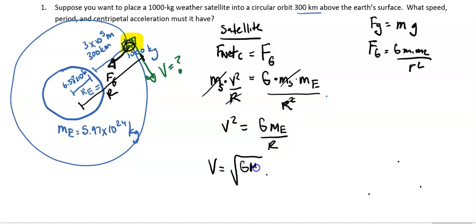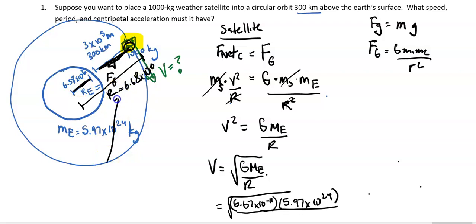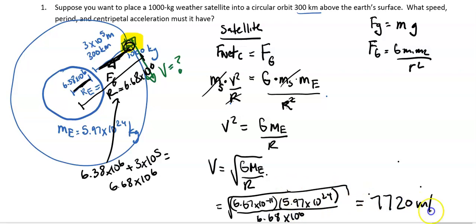Let's go ahead and just plug in numbers now. So 6.67 times 10 to the negative 11, mass of the Earth is 5.97 times 10 to the 24, radius, that is our total radius, which is going to be the sum of our two distances right here. So the distance above the surface of the Earth plus the radius of the Earth, which when I add those two together, I get 6.68 times 10 to the 6th. And again, that is the sum of 6.38 times 10 to the 6th plus 3 times 10 to the 5th is 6.68 times 10 to the 6th. So be very careful with your numbers. And I get 7,720 meters per second, and that is going to be my speed.